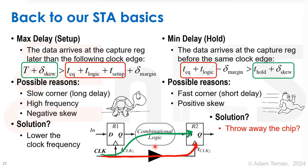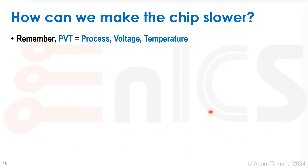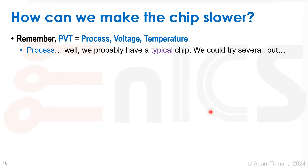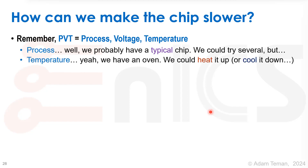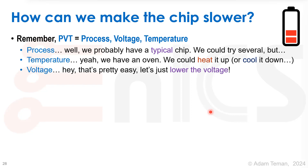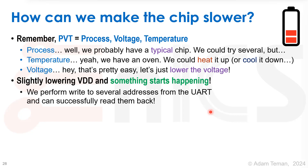If we have a hold violation we'd normally have to throw away the chip. But maybe we can slow it down — turning a fast corner into a longer delay. How do we make the chip slower? Remember PVT: process, voltage, and temperature. Process-wise, chips from the same shuttle wafer won't differ much. Temperature is an option — we have an oven — but temperature inversion makes it unclear which corner is right. The easiest option is to lower the voltage, so we started to slightly lower VDD.